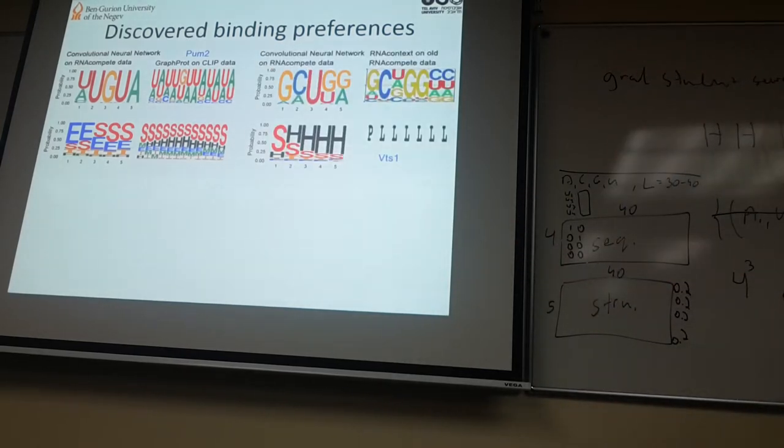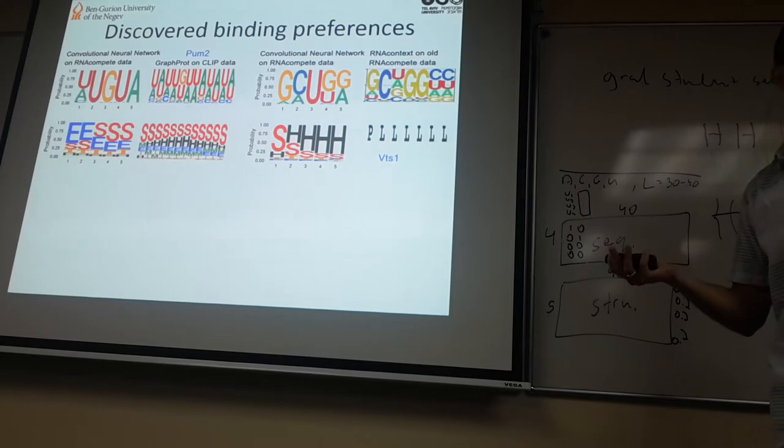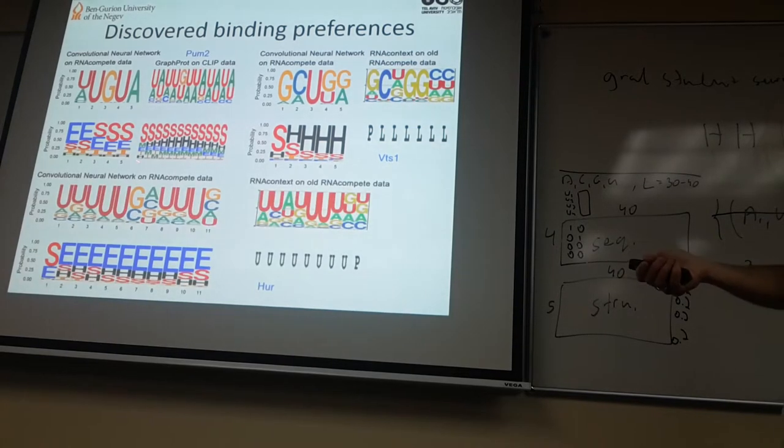Again, different algorithms on different datasets coming up with the same conclusions regarding the binding preferences. So that is very strong and convincing evidence that we picked up the right signal. Or at least the two algorithms were wrong, that's also a possibility. There's also the last example where the HUR protein, which likes to bind the U stretch, and we also pick it in both algorithms on different datasets. So this goes to the visualization, and this leads me to the conclusion of the talk.